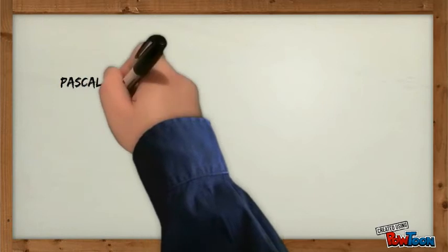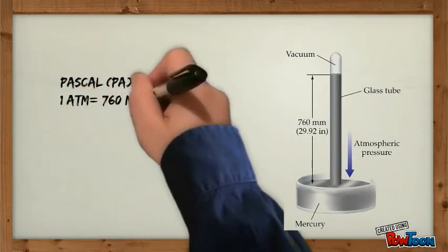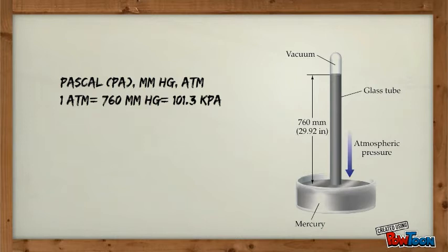Gas pressure can be measured with three units. First one, Pascal. Second one, millimeters of mercury. Third one, standard atmospheric pressure. Standard atmospheric pressure equals 760 millimeters of mercury and 101.3 kilopascal.